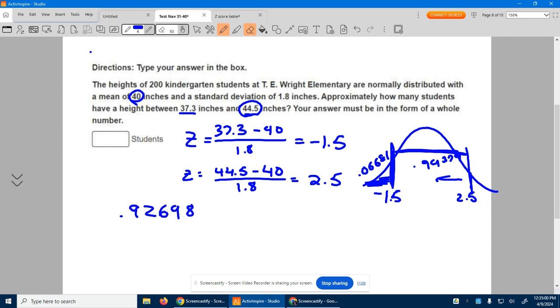That means 92% of the people are right in here that you and I want, 92% of these 200. So all I need to do now is multiply that by 200. And what did I get? I got 185.396. So let's just say about 185 kids.